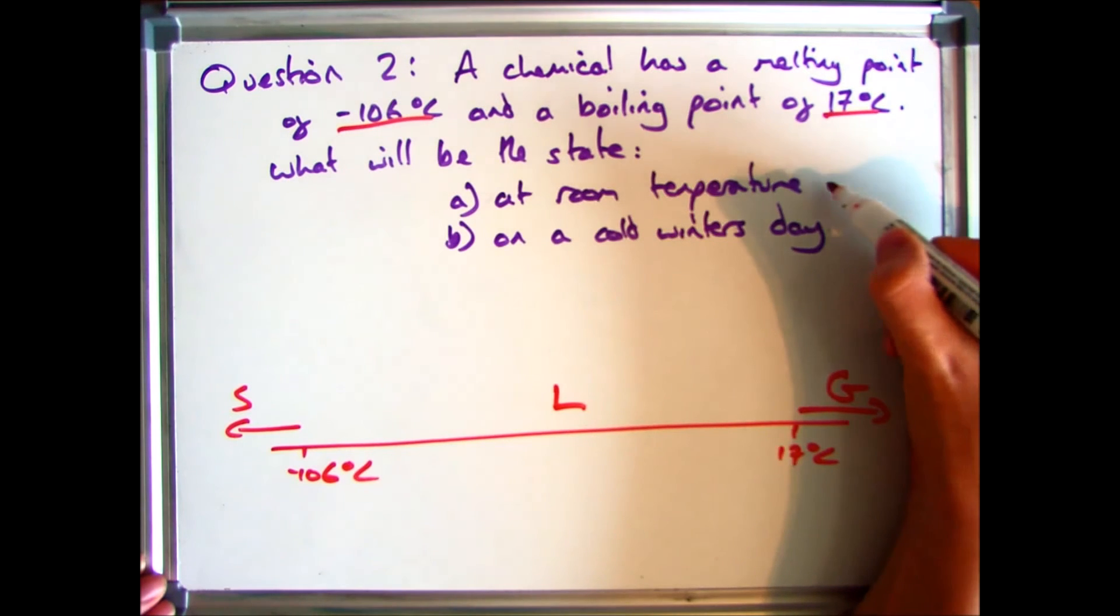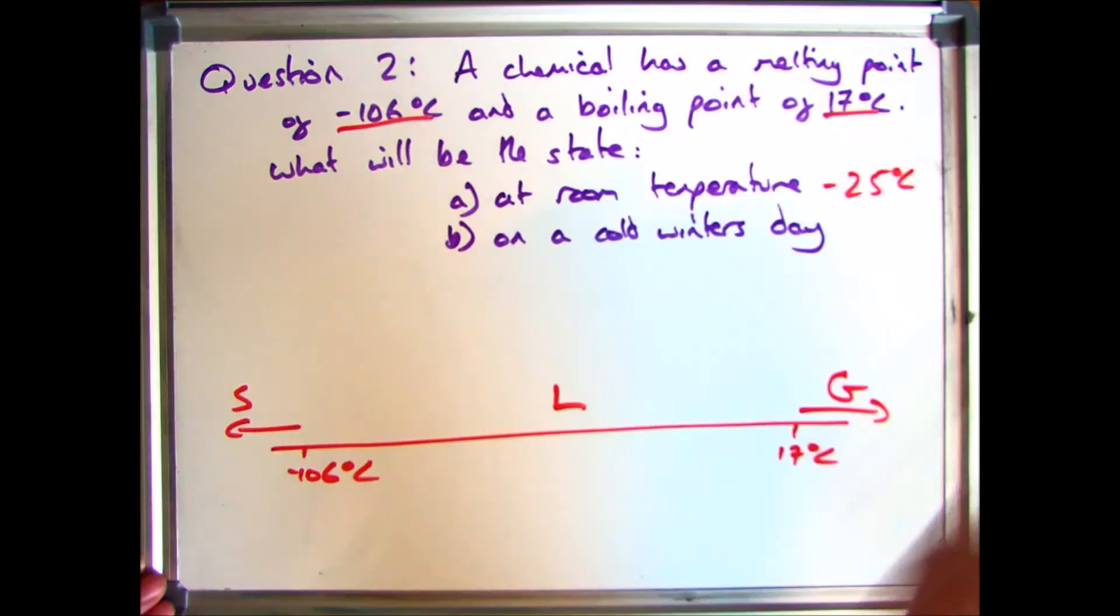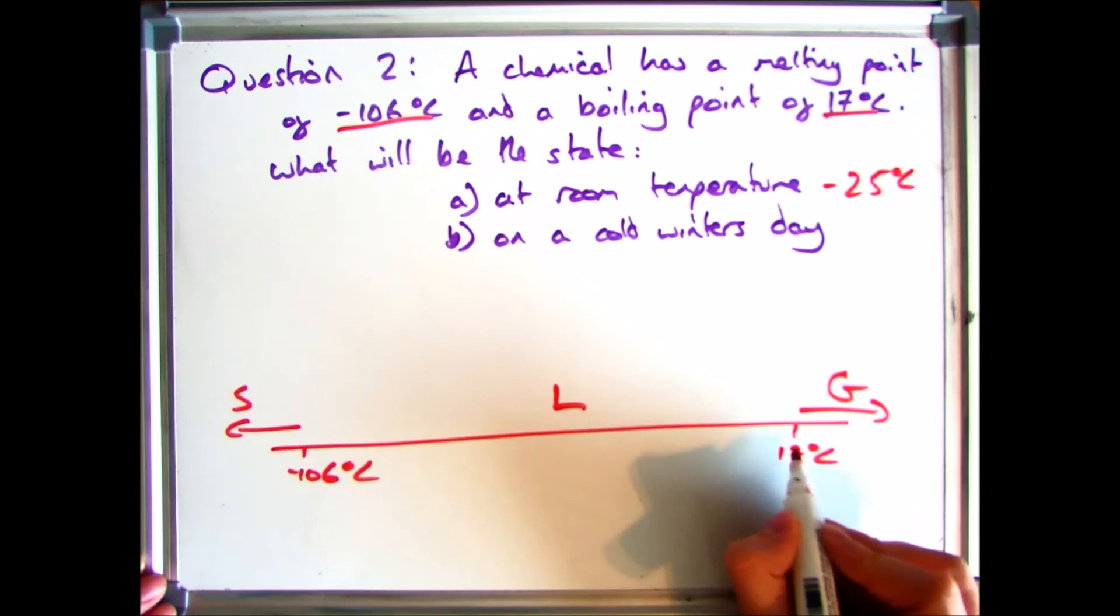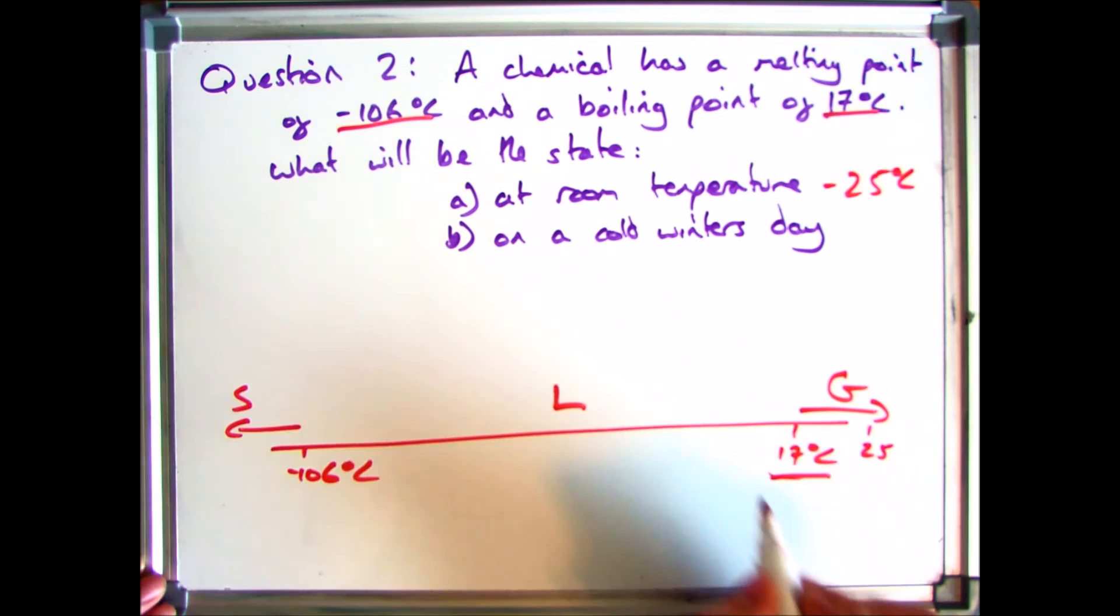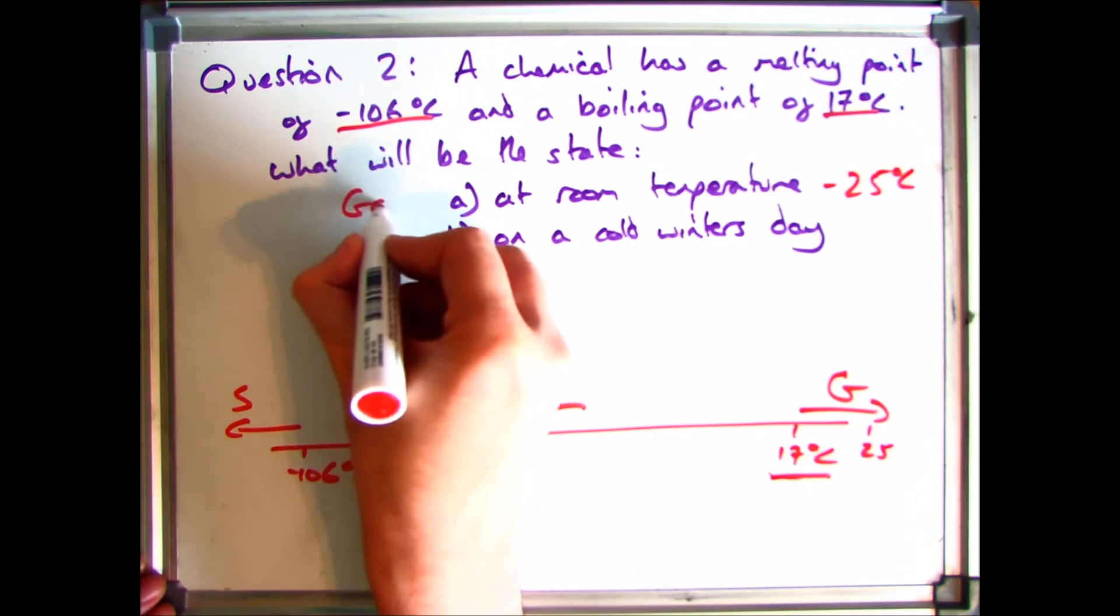So room temperature. That's 25 degrees C. So that is obviously above this 17. So it goes here. So we know that A is going to be a gas.